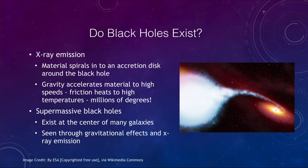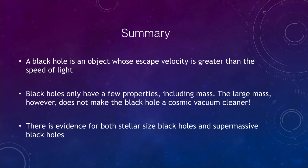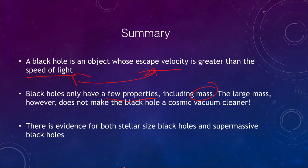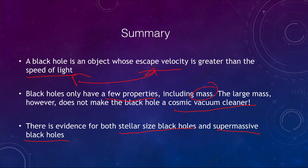So let's finish with our summary. A black hole is simply defined as an object whose escape velocity is greater than the speed of light — since nothing can travel faster than light, nothing can escape from the black hole. They have only a few properties, primarily mass, but that large mass does not make the black hole a cosmic vacuum cleaner. There is evidence for both stellar-sized black holes and supermassive black holes, millions of times the mass of our Sun. That concludes this lecture on black holes — we'll be back next time for another topic in astronomy.